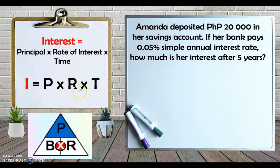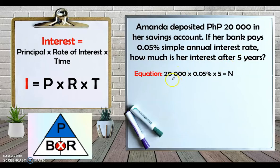So our formula is I (interest) equals principal times rate times time. Going back to our word problem: Amanda deposited 20,000 pesos, the bank pays 0.05% simple annual interest rate, and we want the interest after five years. Our equation is 20,000 pesos (the principal) times 0.05% (the rate of interest) times 5 years (the time). We just have to multiply these three values.